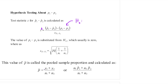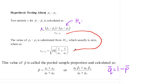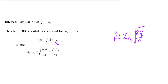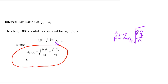p-bar is x1 plus x2 over n1 plus n2, where x is the number of successes. And q-bar would be 1 minus p-bar. Class, please note that for hypothesis testing, the sample standard deviation of p1-hat minus p2-hat uses the pooled sample proportion — this differs from the formula used for the confidence interval, which uses the square root of p1-hat q1-hat over n1 plus p2-hat q2-hat over n2.